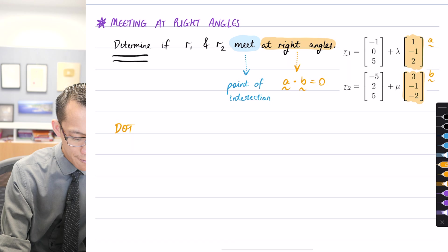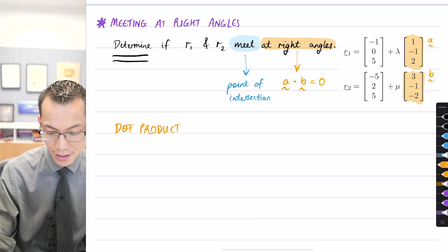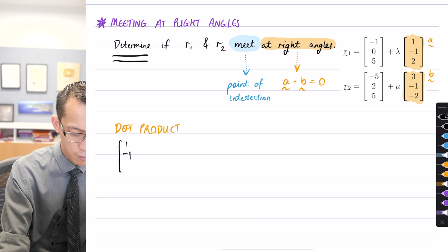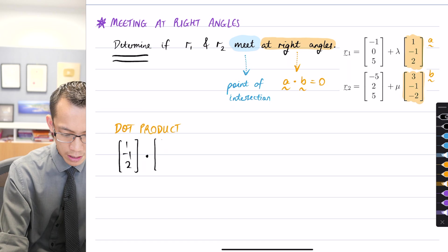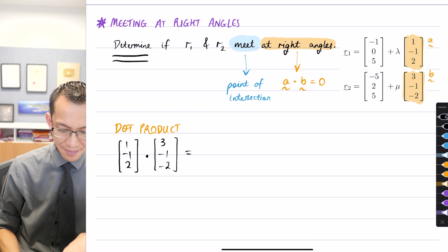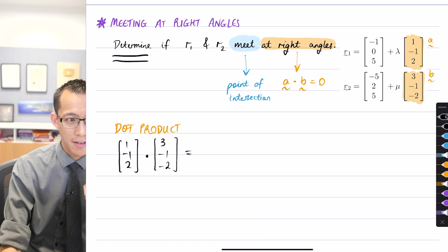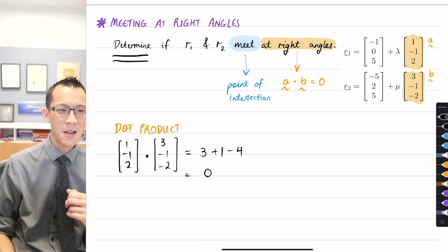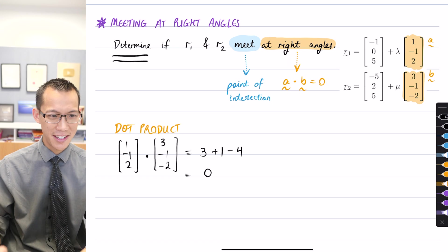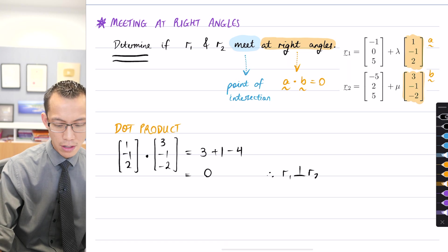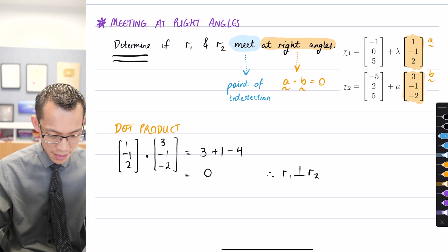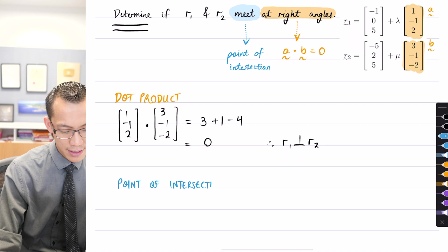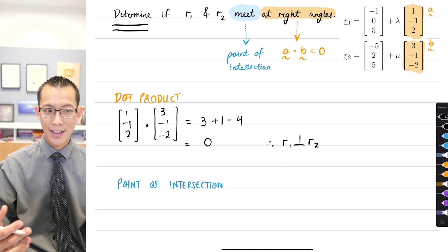Finding the dot product is absolutely faster. It's worth mentioning if they said prove that r1 and r2 meet at right angles, I'd already know I'm going to get the right answer so it doesn't matter which order. But in this case it says determine, so I don't actually know. Let's do the dot product first. I've got (1, -1, 2) dot (3, -1, -2). What do we get? 3 plus 1 minus 4. This is zero. Therefore r1 is orthogonal to r2.